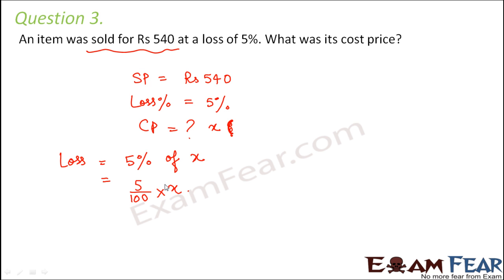Now we already know that loss is given by CP minus SP. That is the difference of the cost price and the selling price. So cost price is X. Selling price is 540. And what is loss? Loss is 5X by 100. That is what we calculated here. So now we have to solve this equation.